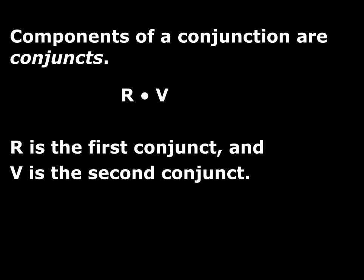It's going to be convenient for us sometimes when we have a conjunction like R and V to be able to talk about the components of that conjunction. So we will just call them conjuncts. So R and V is a conjunction. The first conjunct is R. The second conjunct is V. So conjunction, pretty straightforward.